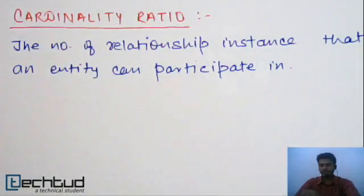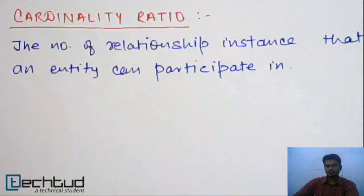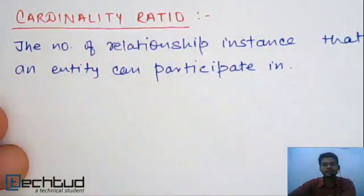Hello, welcome to tech2.com. In this lecture we will understand one of the types of relationship constraints, which is cardinality ratio. Cardinality ratio is the number of relationship instances that an entity can participate in.